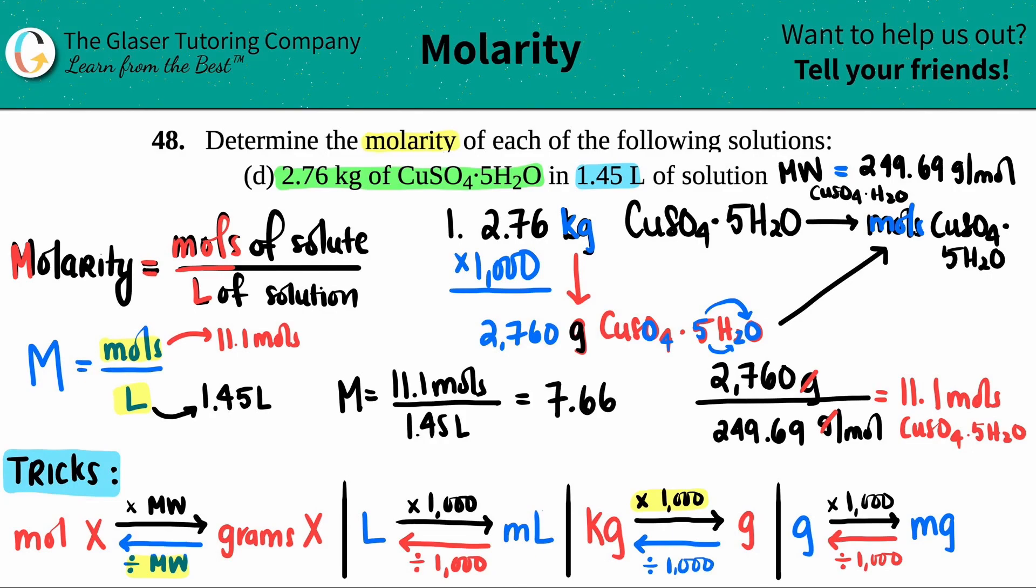Units. Molarity can either be seen as a capital M or since these units do not cancel out, it would literally just stay mole per liter. Either unit is acceptable for a molarity. And this guy, it's a high number. It's almost eight molarity. That's pretty concentrated. That means that you have a lot of solute in your solution. The higher molarity, the higher the amount of solute in your total solution.